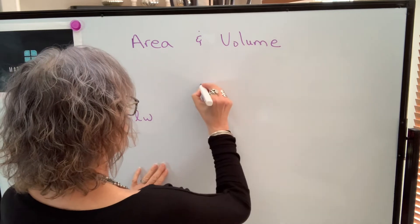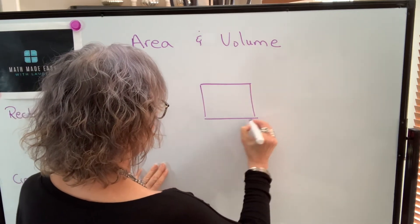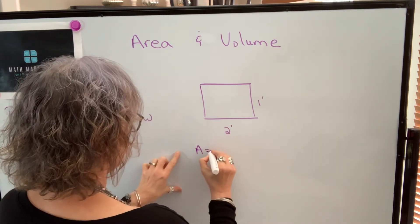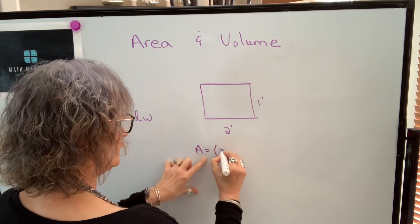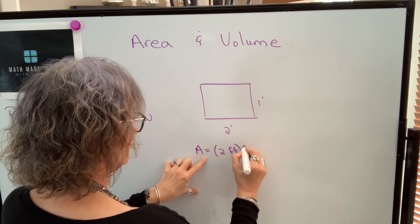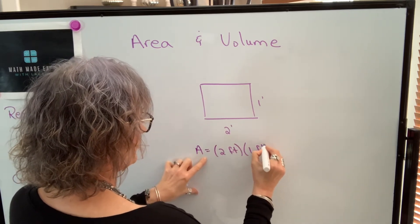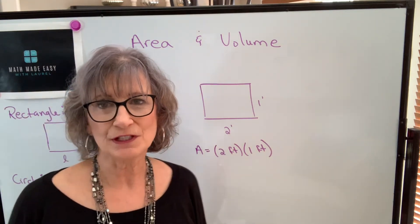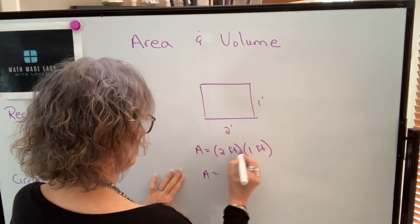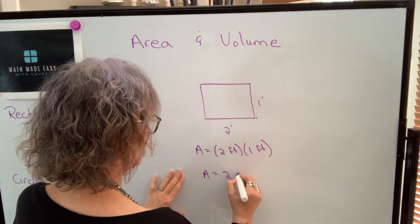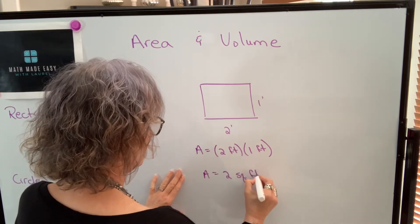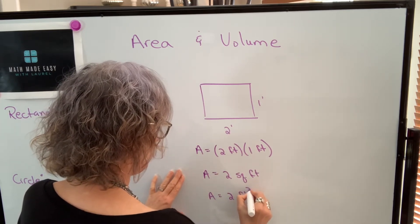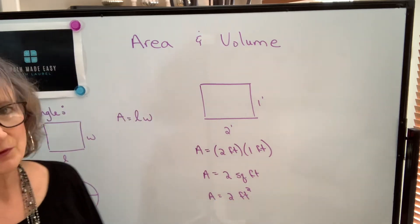So if I had a rectangle that had a length of two feet and a height of one foot, the area — you can either write with the units in the formula, or you can leave them out and understand that your final answer will be in square feet. We're going to get an area of two times one, which is two, and feet times feet is square feet. You can use an exponent to represent that, so you could write two feet with an exponent on the feet — so that means two square feet.